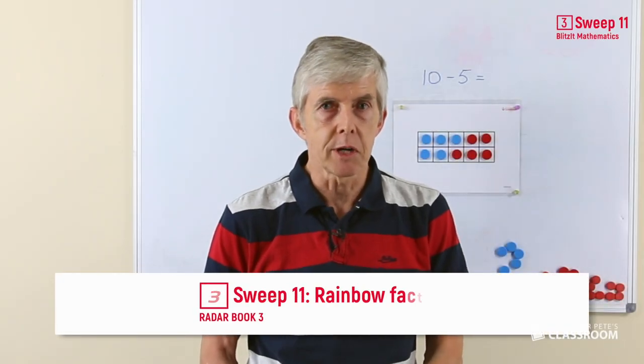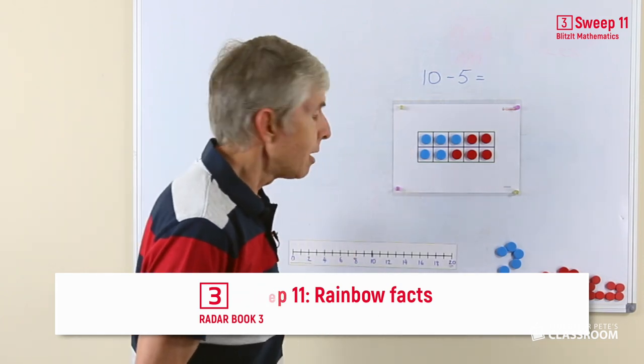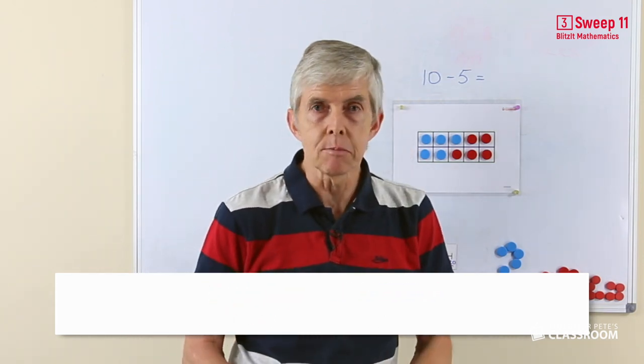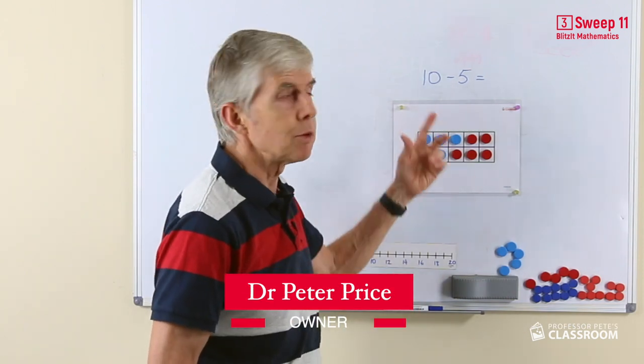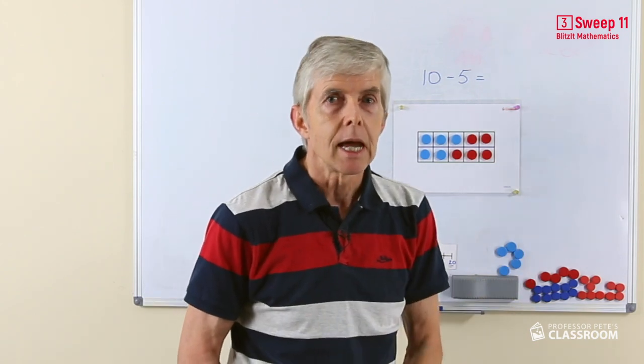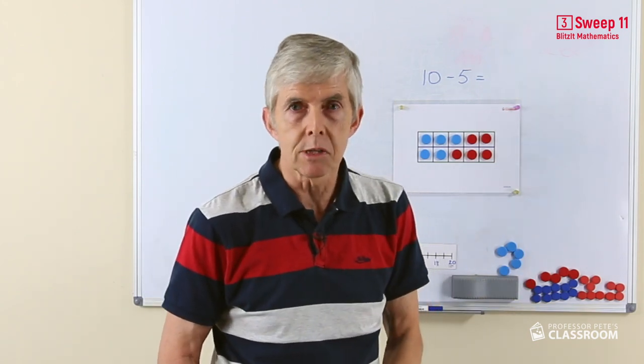In sweep number 11, we use the rainbow facts again, this time for subtraction. The easy part of this is that all the sums in the rainbow fact equal 10, and so all the subtraction facts start with 10, so they're 10 take away something, and we'll find out the result.